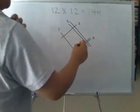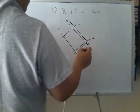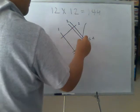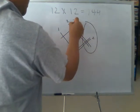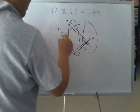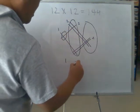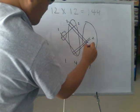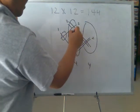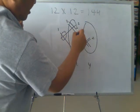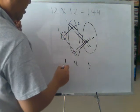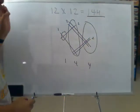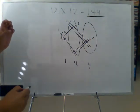And then let's count the number of intersections. The number of intersection here, and the number of intersection here. And we get 1, 4, 4. We have 4 intersections, and 4 intersections in the middle, and 1 intersection on the left. So we have 144, which is the answer. Amazing Japanese multiplication method.